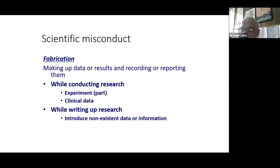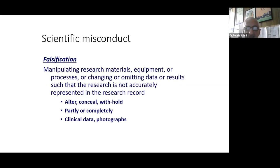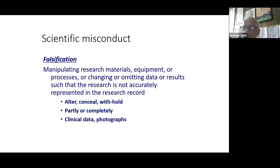It's done frequently enough for people to be bothered about it. One reason people are more worried today about fabrication and falsification is that systematic reviews and meta-analyses combine data from multiple studies to get stronger, more reliable results. If you rely on one or two papers with false or fabricated data, you could change the outcome of your systematic review or meta-analysis, impacting patient outcomes for treatment modalities that may not actually have the strength they're supposed to have.